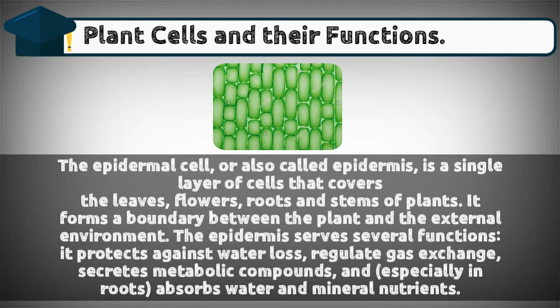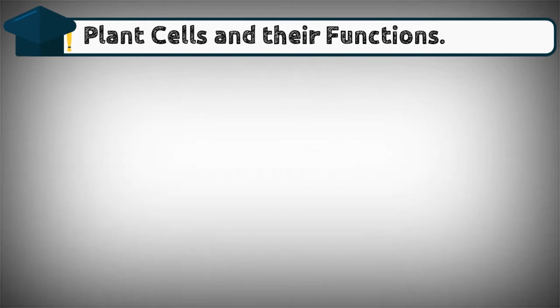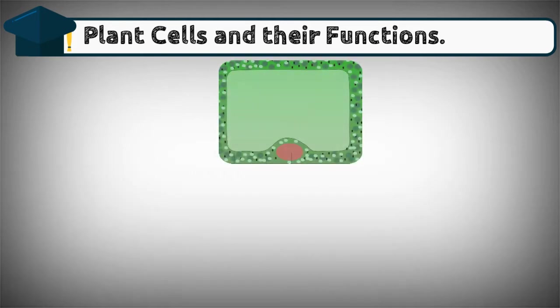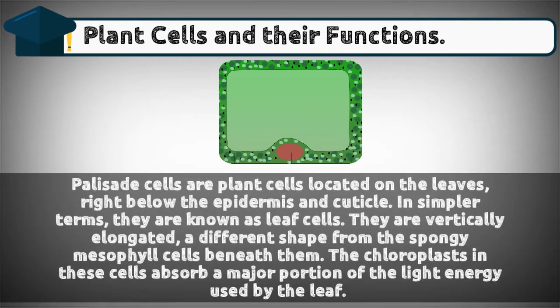Especially in roots, the epidermis absorbs water and mineral nutrients. Palisade cells are plant cells located on the leaves right below the epidermis and cuticle — in simpler terms, they are known as leaf cells. They are vertically elongated, a different shape from the spongy mesophyll cells beneath them. The chloroplasts in these cells absorb a major portion of the light energy used by the leaf.